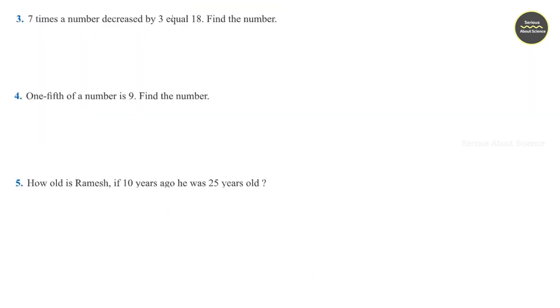Question number 3. 7 times a number decreased by 3 equals 18. Find the number. Here also, let us assume the number to be N. Then, according to the question, it is given 7 times N. That is 7N decreased by 3, minus 3, is equal to 18.